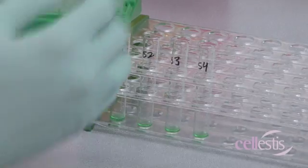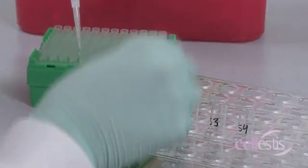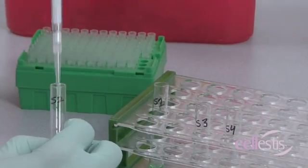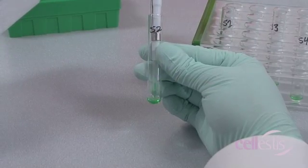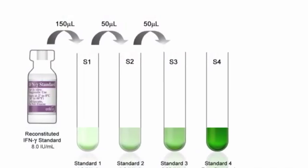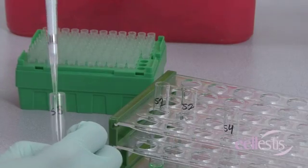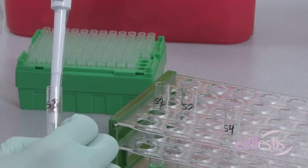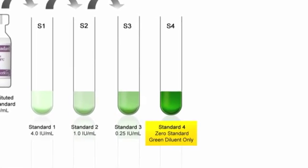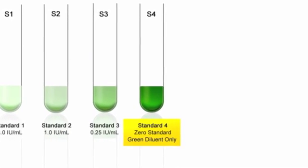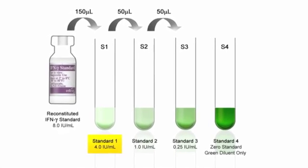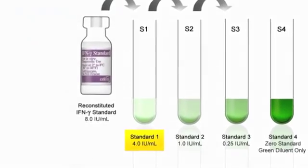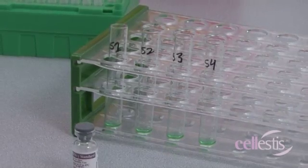Add 150 microlitres of the kit standard to tube labeled S1 and mix thoroughly. Perform serial dilutions by transferring 50 microlitres of S1 to S2 and mix thoroughly. Then transfer 50 microlitres from S2 to S3 and mix thoroughly. Remember not to transfer anything into tube S4. It contains only green diluent as it serves as the zero standard. The undiluted kit standard in S1 serves as the highest concentration at four international units per milliliter. Set the standards aside for use in the ELISA reaction steps.